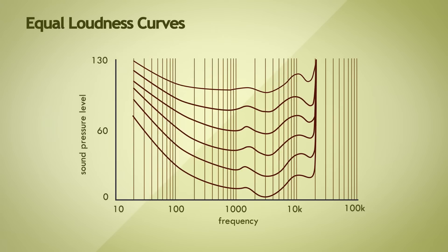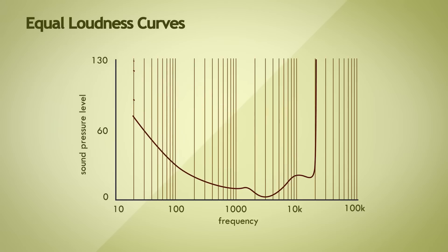We are interested in a single curve in this set of curves. The bottom one, the threshold. This single curve represents a concept called the absolute threshold of hearing. Quite simply, it visually shows us the minimum sound pressure level of a pure tone that an average human ear can hear, with no other sound present.